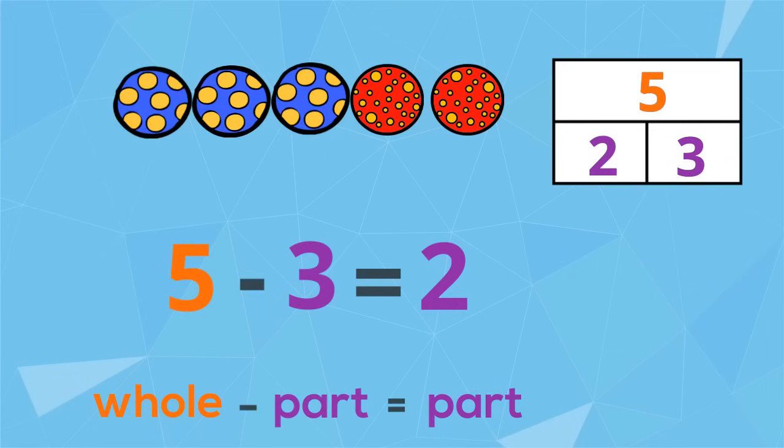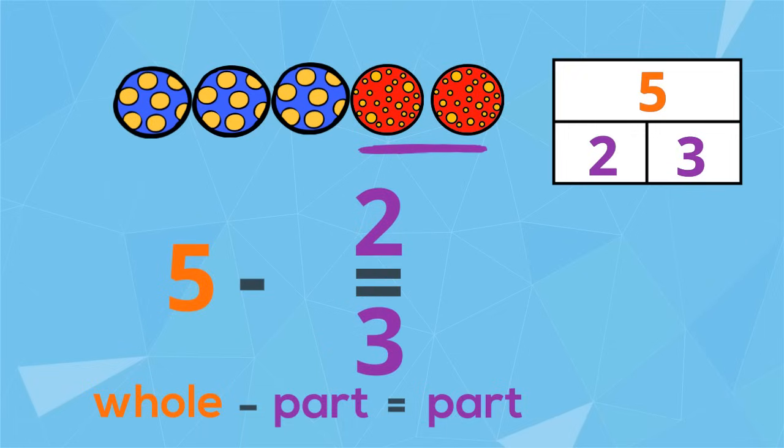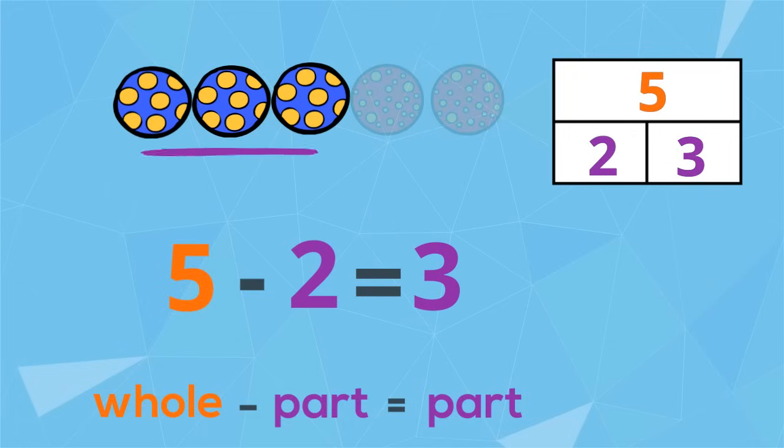Let's try the turnaround. Because we are doing subtraction, we must still begin with the whole. But this time, we will subtract 2. We are left with the remaining part, 3.